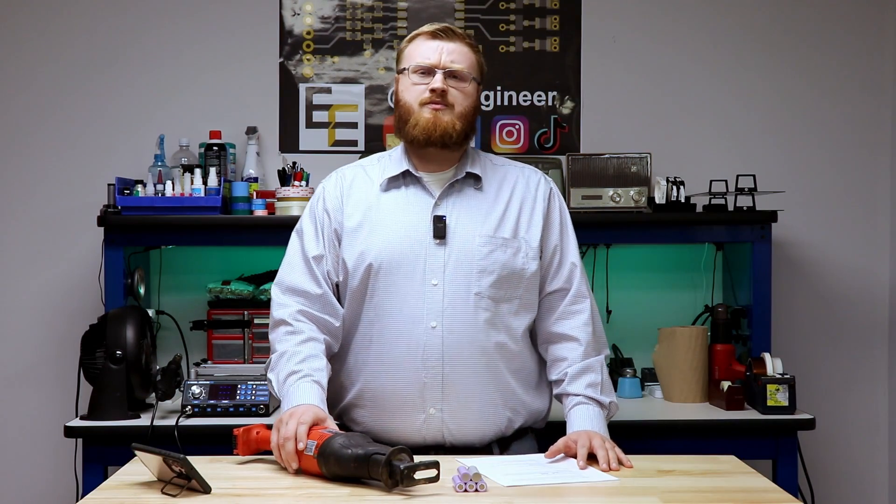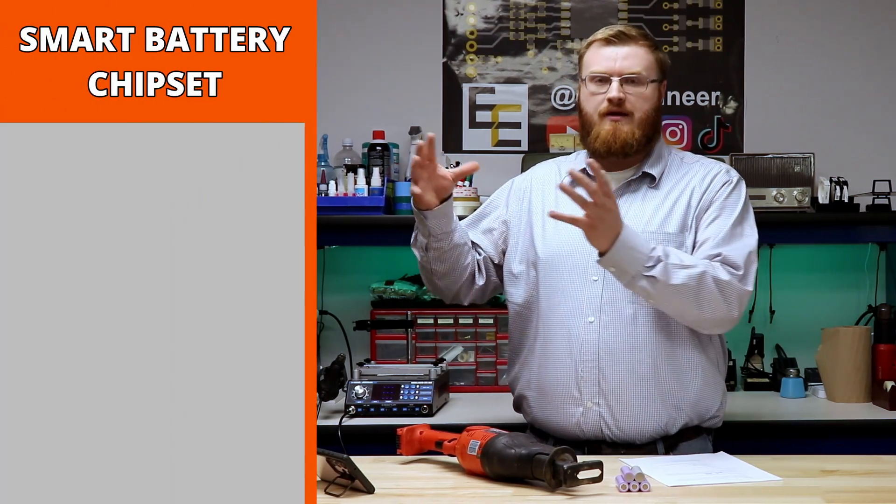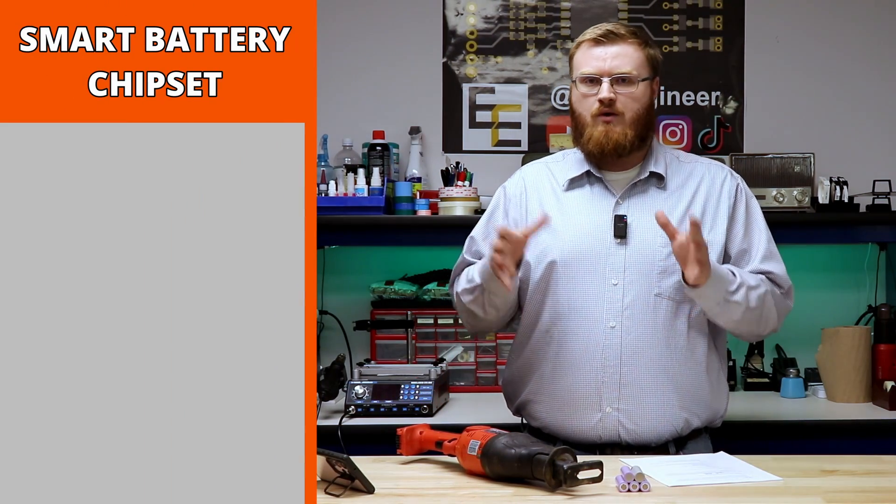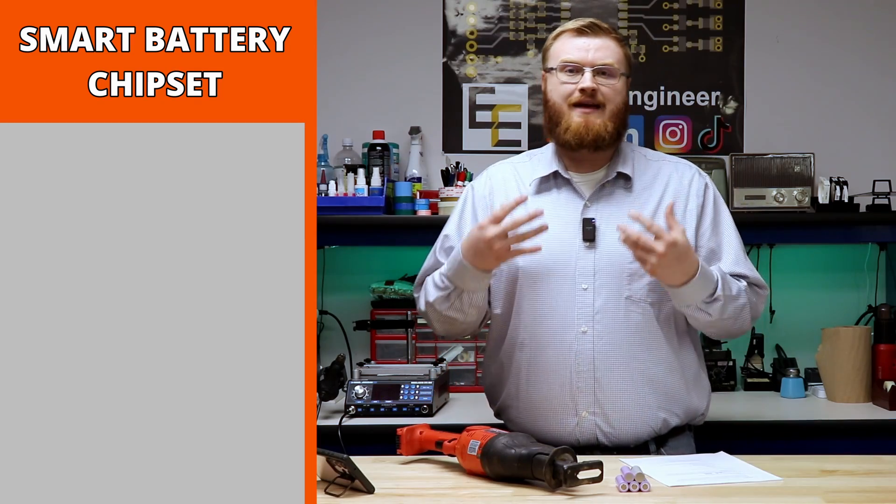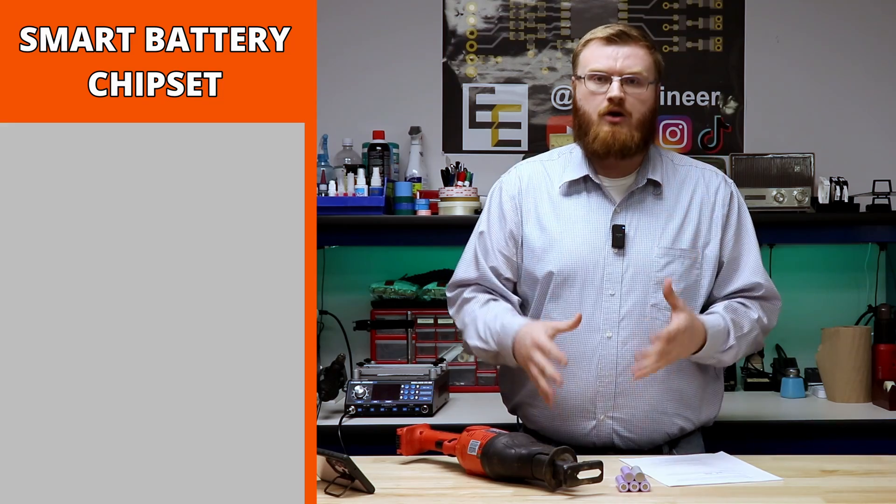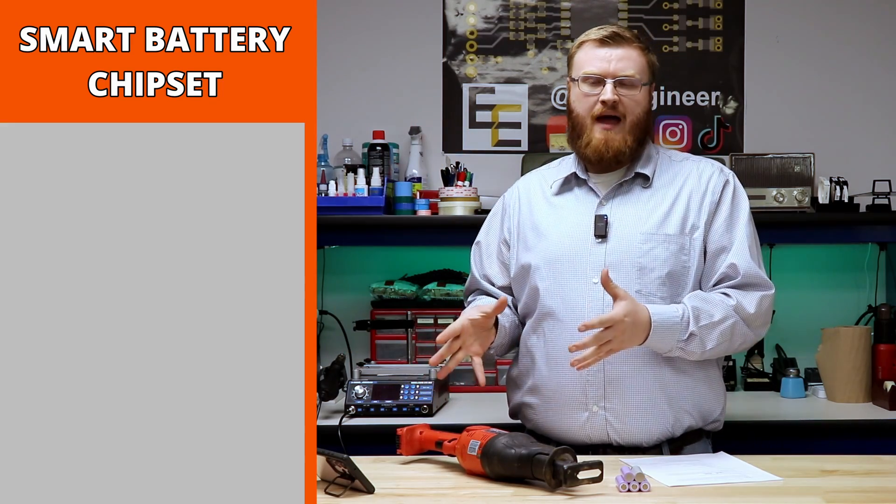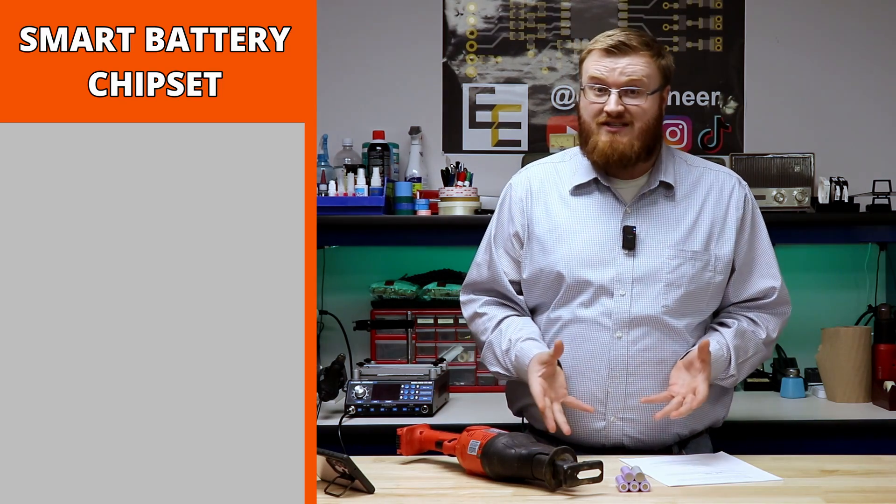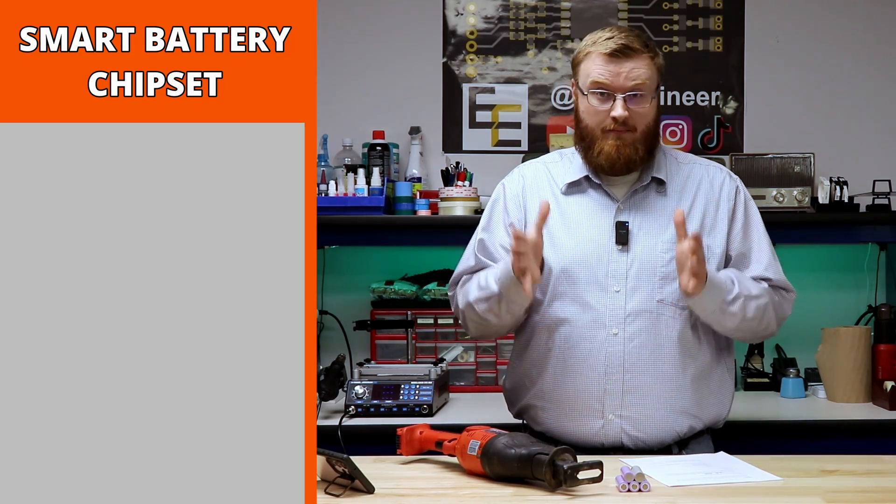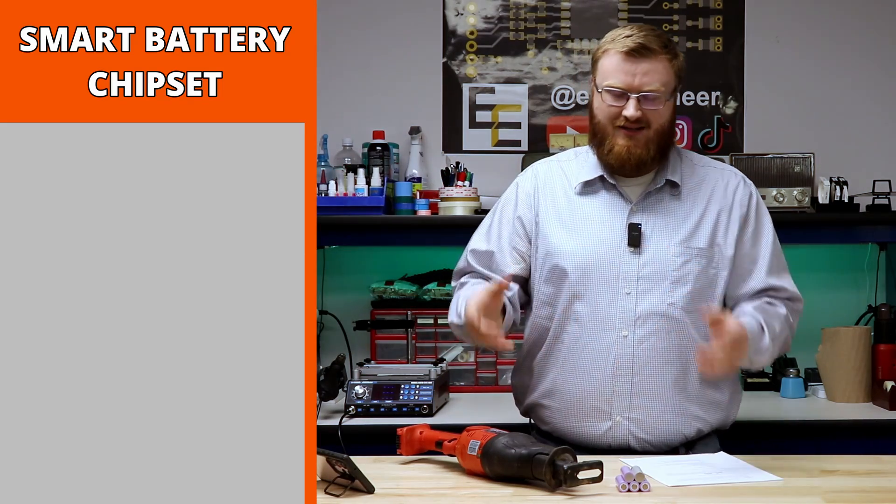The first type of chipset we'll be looking at is a smart battery chipset, sometimes called a fuel gauge. However that's not quite the right term because you can get fuel gauges that are just that, fuel gauges that monitor the pack current and voltage and give you an output of the capacity but don't have any safety features. So this is a smart battery chipset with fuel gauging included.